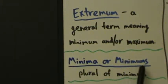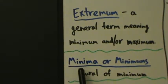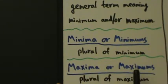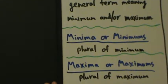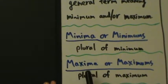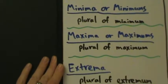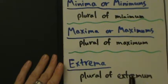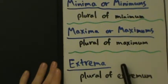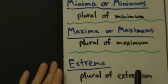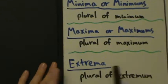Minima or minimums is just the plural of minimum. So if you want to say the function has no minima, that means there are no minimum values for the function. Maxima or maximums, similarly, just means plural of maximum. So minima and maxima are probably more common, but either one is okay. And then extrema is the plural of extremum. You could also say extremums, but I've never really seen that word used — extrema is the standard.